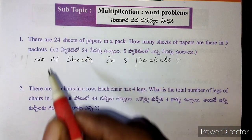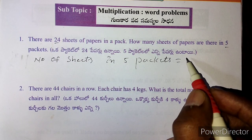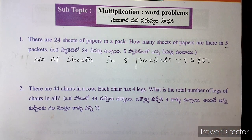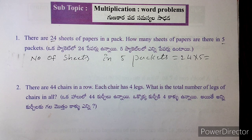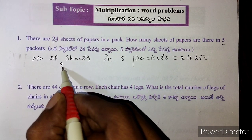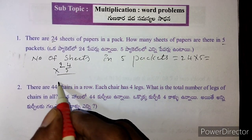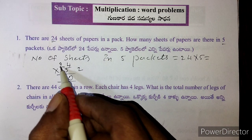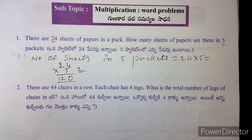Number of sheets in 5 packets is equal to 24 into 5. That is equal to 24 into 5, which gives 120 sheets.